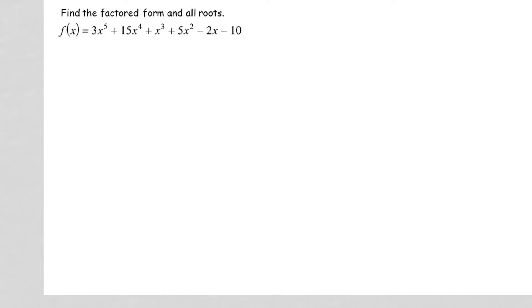Find the factored form and all roots. I know I'm going to have five roots because this has a degree of five. I put this entire equation in my calculator under the table and I see that when x equals negative five, y is zero. So this will definitely be one of my roots, and I'm going to use that with synthetic division to make this easier to work with.